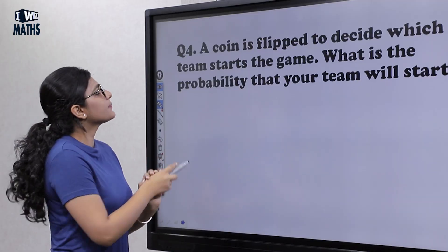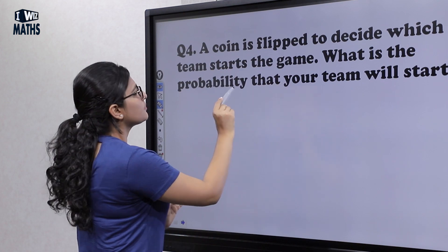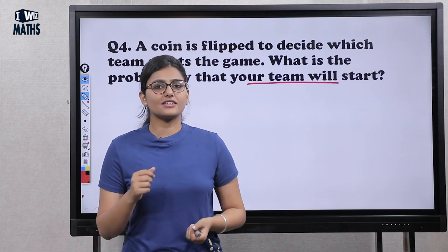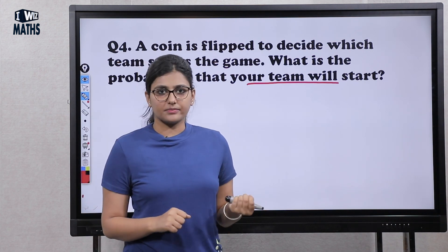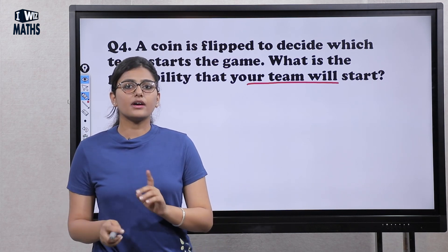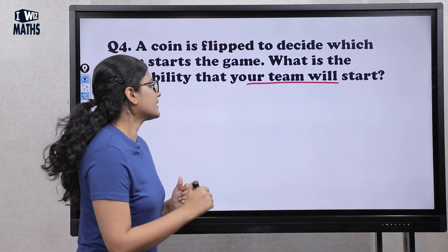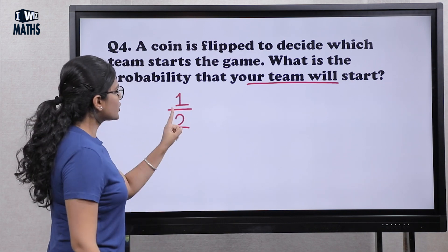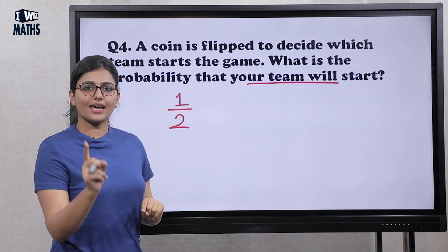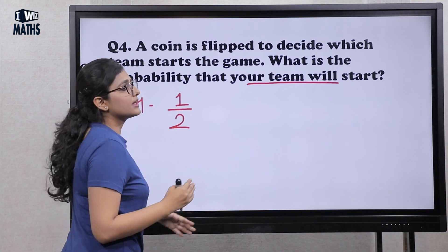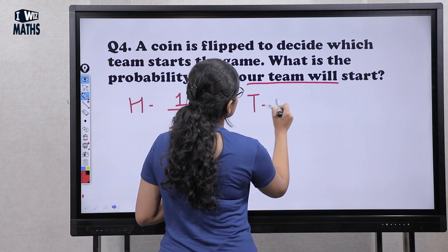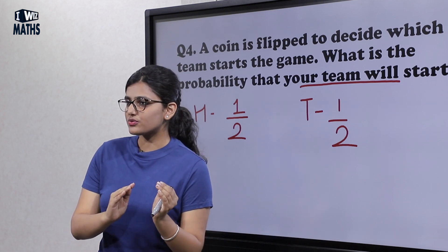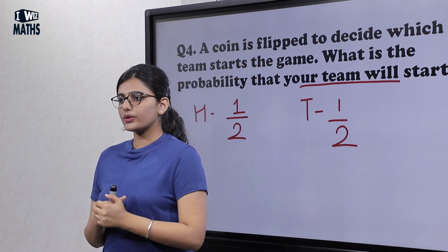The question says: a coin is flipped to decide which team starts the game. What is the probability that your team will start? You toss a coin — heads will come or tails will come. Suppose you chose heads. The probability of heads is 1 by 2, because the total outcome is 2 (heads or tails) and we asked for heads. Similarly, if you choose tails, the probability is 1 by 2. So your chances of starting the game in both cases is half.